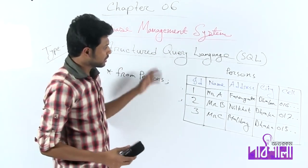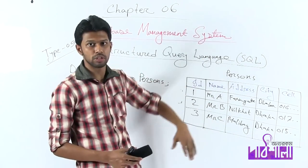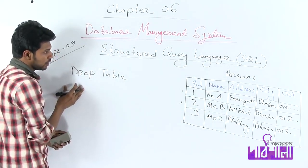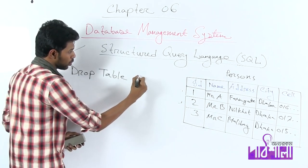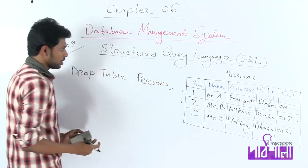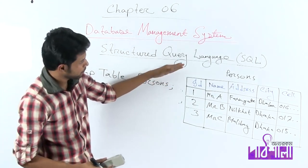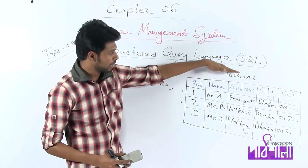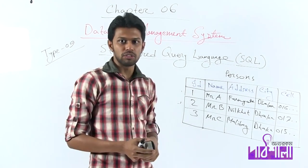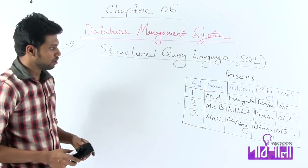If you want to delete the entire table — the table is deleted using the DROP TABLE statement. Which table is deleted? DROP TABLE persons. This is the persons table. If you run this, you can delete the entire persons table.